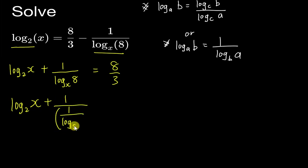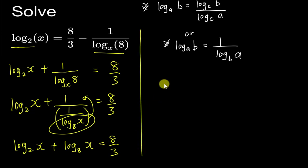Therefore I have log₂(x) plus 1 over this one will be 1 over log₈(x), which equals to 8 over 3. Because 1 over 1 over, the whole thing can bring to the front, so therefore I will get log₂(x) plus log₈(x) equals to 8 over 3.